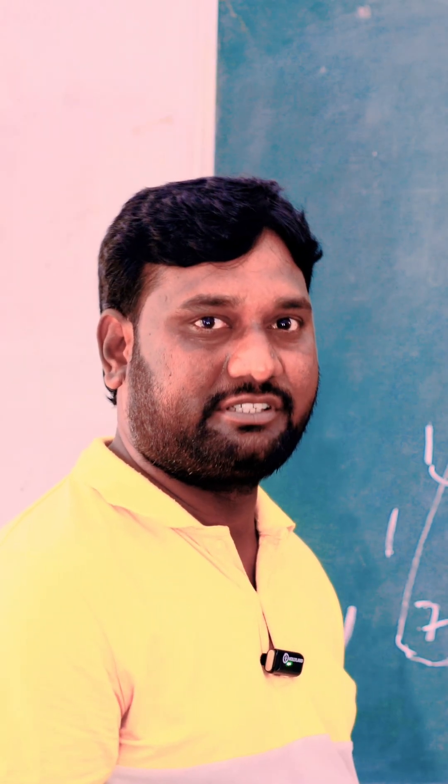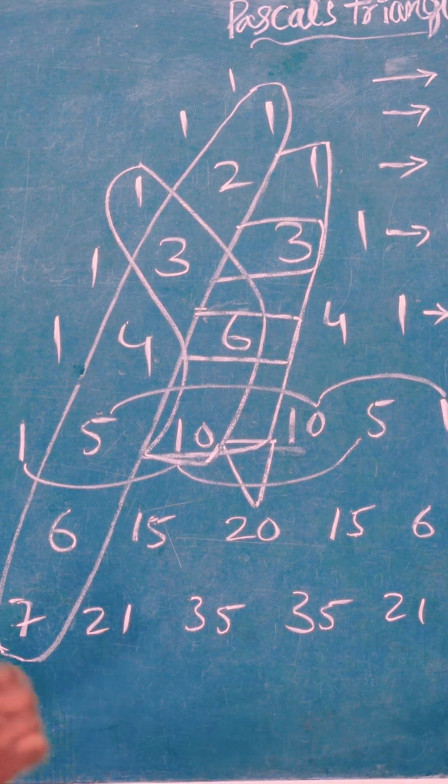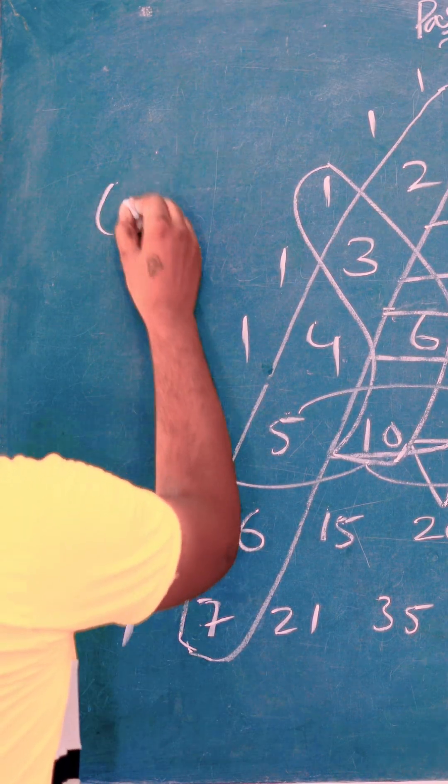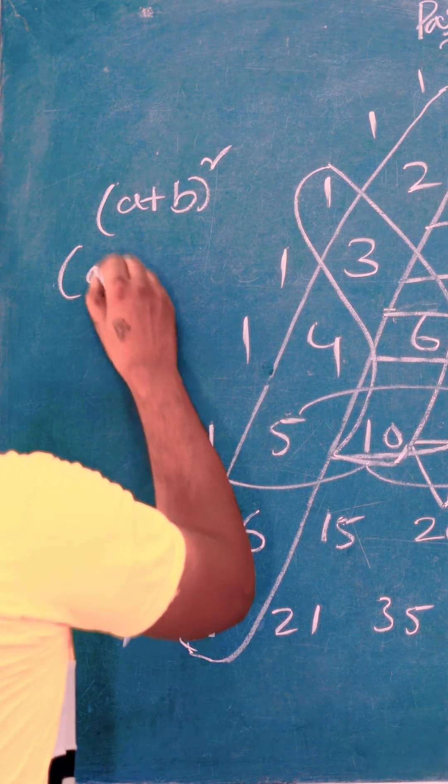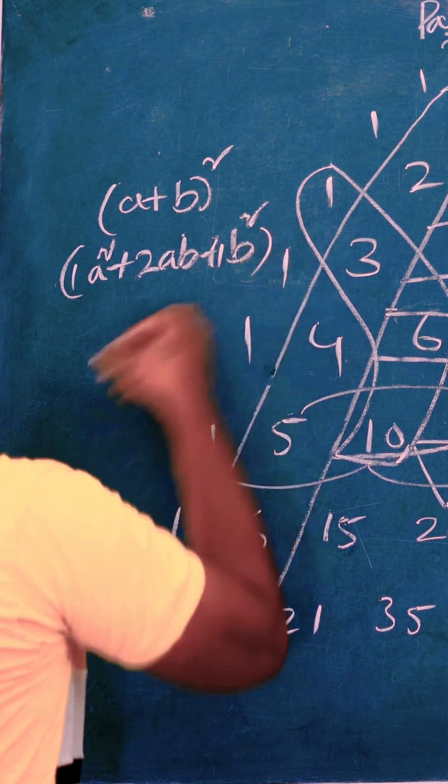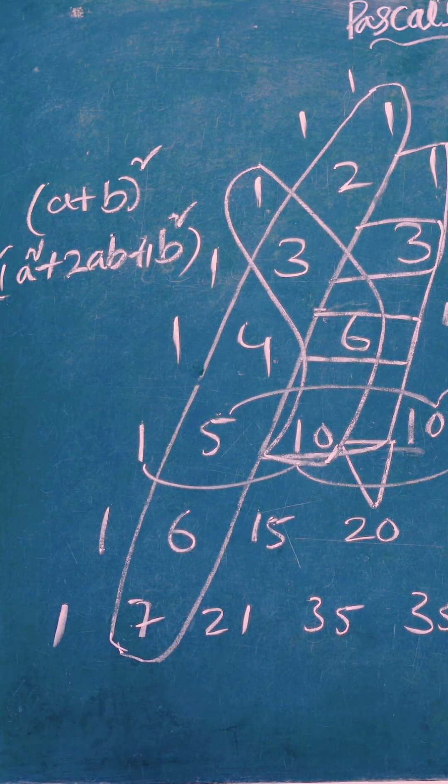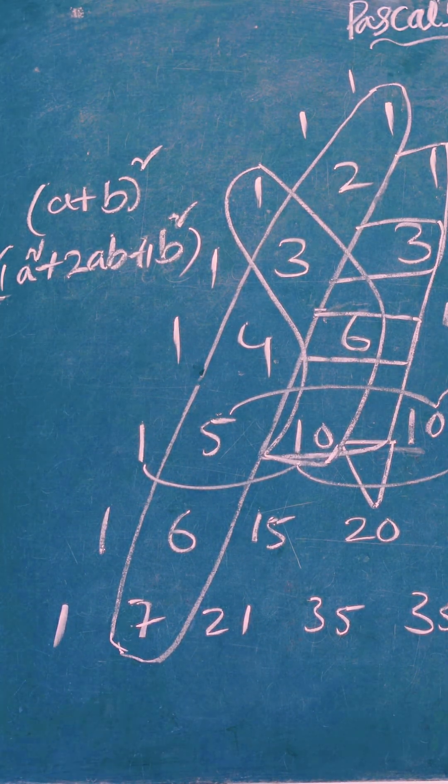Next, binomial expansion. Here helps find coefficients in binomial expansion. Just think a plus b whole square: a square plus 2ab plus b square. Here 1a square, 1b square also no problem. So here 1, 2, 1. Here we get coefficients of binomial expansion.